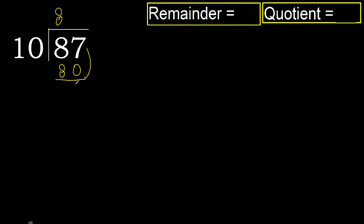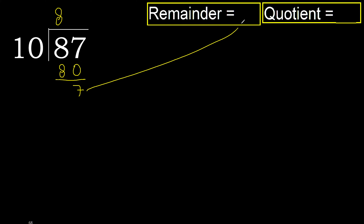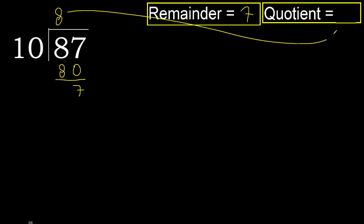Subtract 7. Next — that is not a number, therefore finish it. The remainder is 7, and the answer is 8.